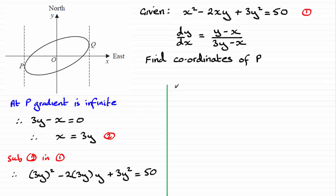And if we carry on, what we've got here is 9y squared. So we've got 9y squared and then we've got minus 6y squared there and plus another 3y squared and that equals 50. So we end up with a total of 6y squared here equals the 50.